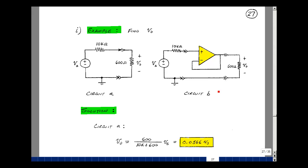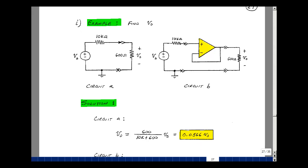Let's do the same thing by putting this voltage follower between the input and the output. For circuit A, I've got the conditions for a voltage divider. This current is the same as this current. So voltage here is 600 over 10k plus 600 times V-sub-S. That turns out to be a very small number, 0.0566 times V-sub-S.